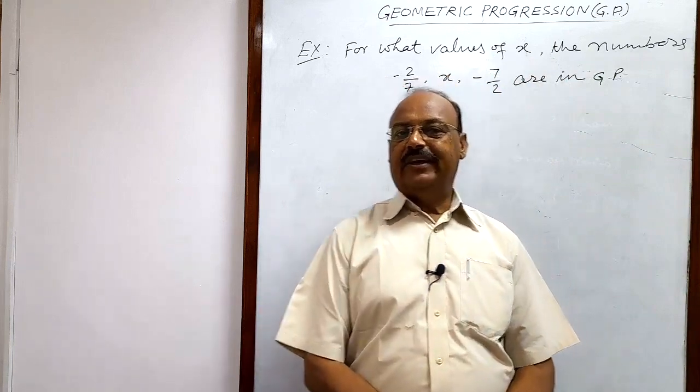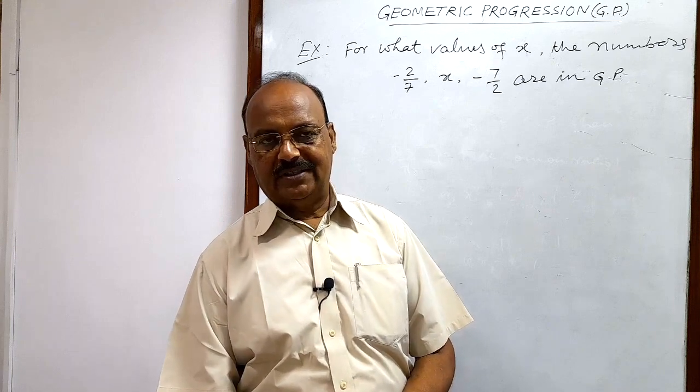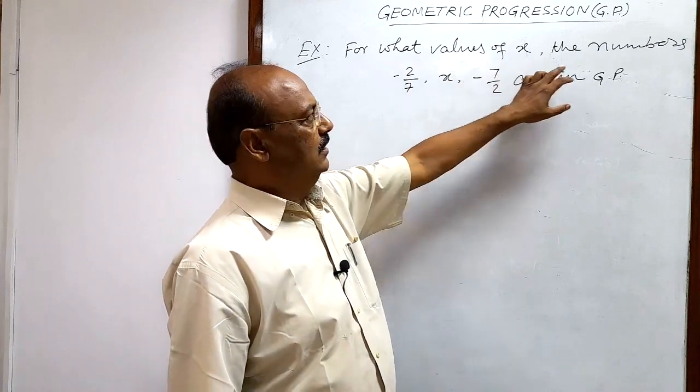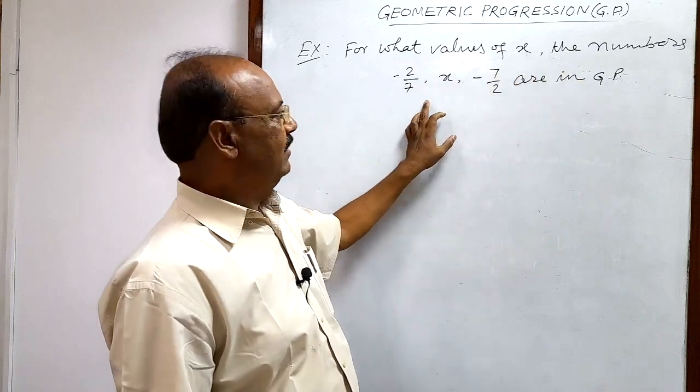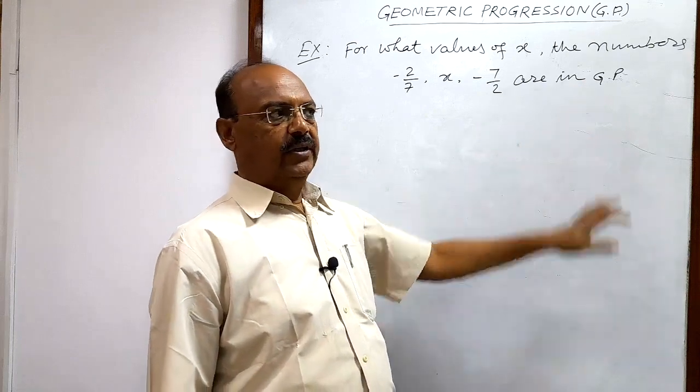Welcome students. Here we will see a very interesting but important question from the topic geometric progressions. The question is: for what values of x are the numbers minus 2 by 7, x, and minus 7 by 2 in GP?